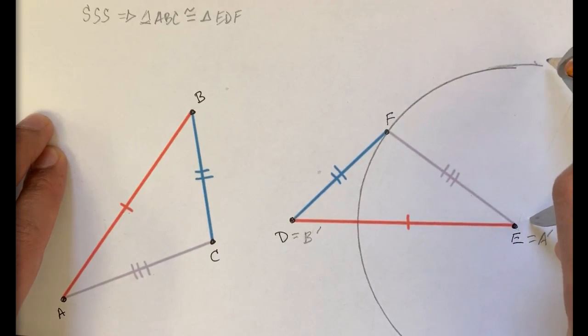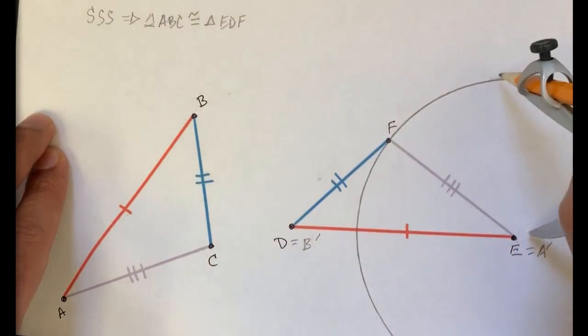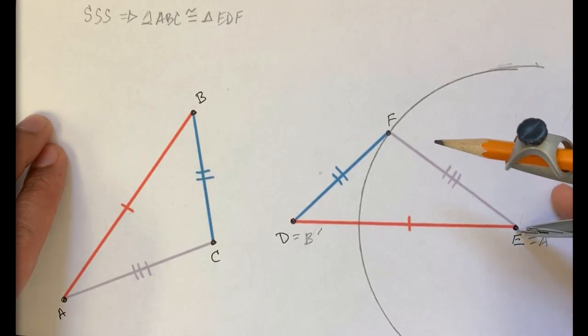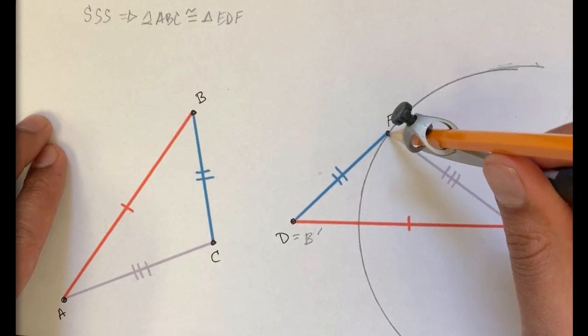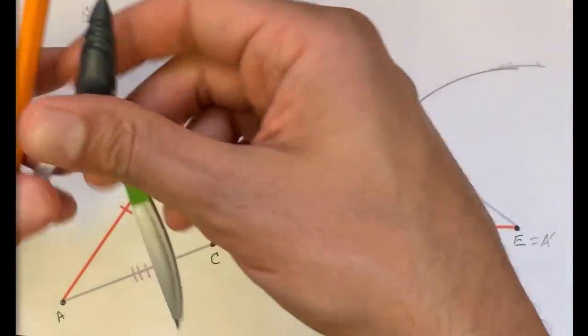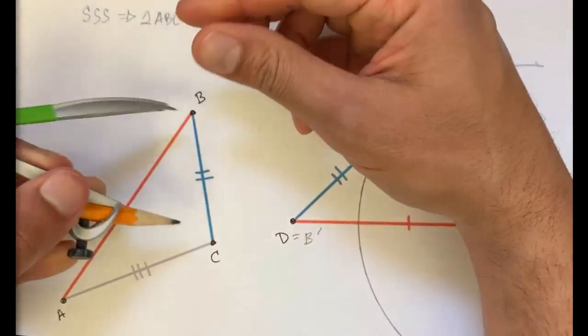So point C, I guess we could say C prime, or C will be mapped to some point on that circle if you take it from A's perspective, because that's how far C is from A.